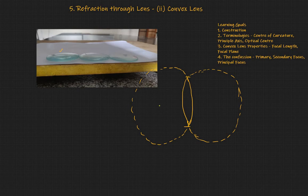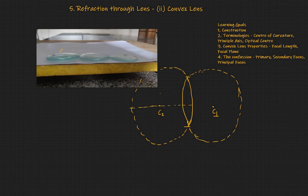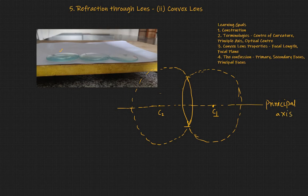Now, these two imaginary spheres have two centers. Let's call them C2 and C1. The reason I call this C1 is because, as far as when light is entering, this is the first surface. There's a line that connects these two centers, and this line is usually called the principal axis.